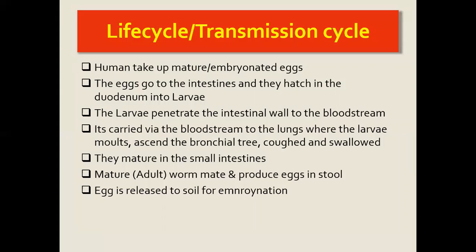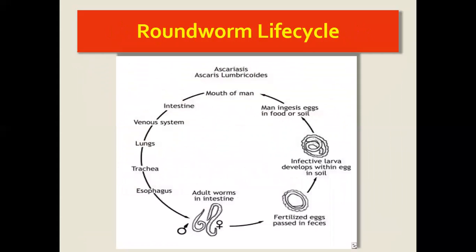The eggs are shed in the stool. When the person passes stool, perhaps on soil, the eggs are deposited there. They then take some time for embryonation or maturation, and become infective again. If they end up in the mouth through contaminated fruits or other objects, the cycle repeats in the new host.